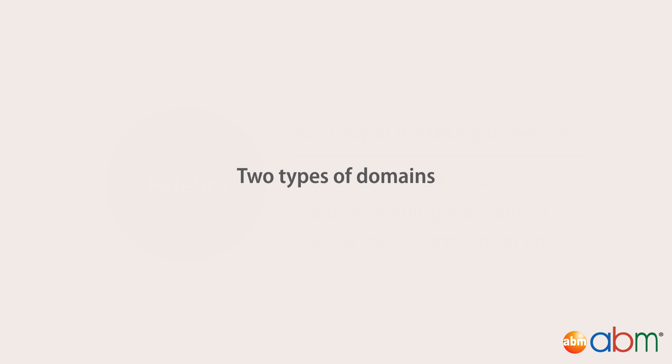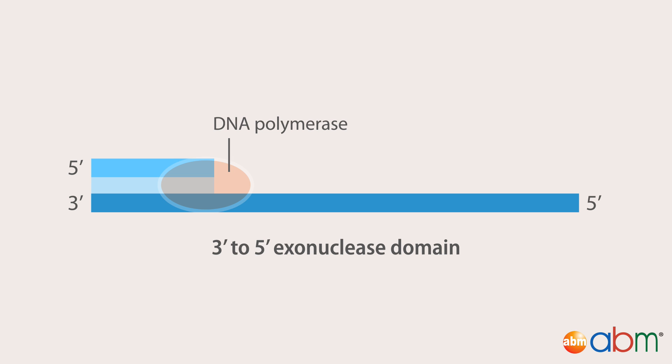There are two types of domains a polymerase can have. First is the 3' to 5' exonuclease domain, which allows them to remove misincorporated nucleotides from the 3' end while the DNA is being formed in the 5' to 3' direction.